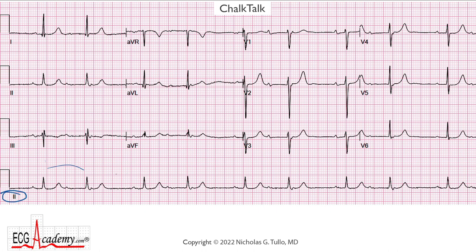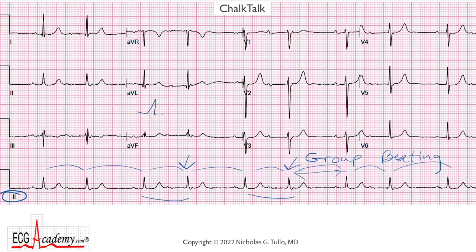The R-to-R intervals are shorter, and then longer, and then shorter, and then longer — so it's regularly irregular. I like to refer to this as a bigeminal rhythm because every other QRS complex is earlier. Some people will also refer to this as group beating because you have groups of two. Normally group beating is pretty obvious with long pauses between groups, but here the pauses are very subtle.